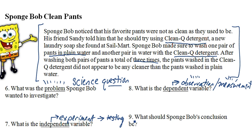And for number nine, we need to write a conclusion for SpongeBob. The conclusion is something that we would use to say whether or not the experiment yielded significant results. What were the results? How significant were they? And you can write a statement there.